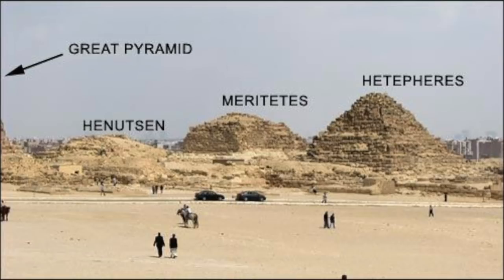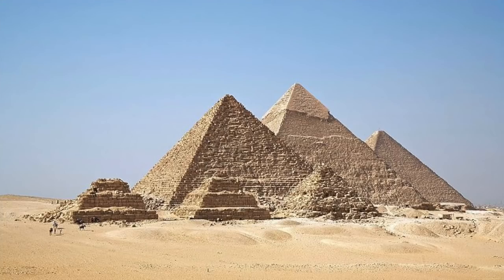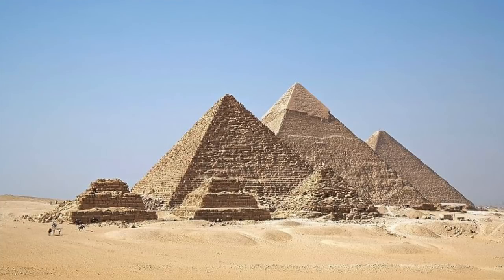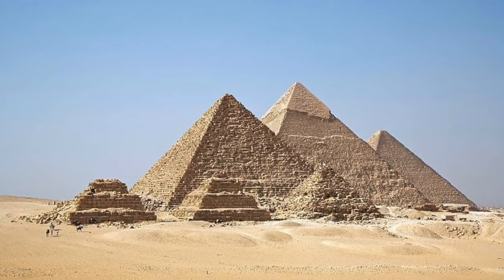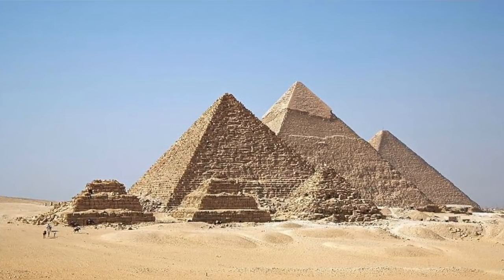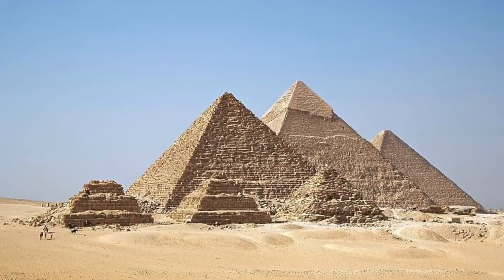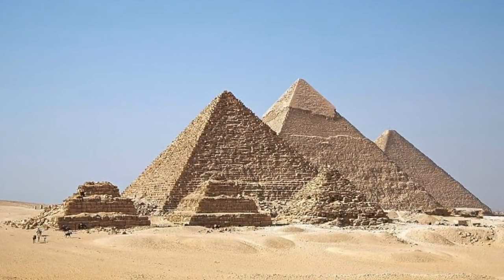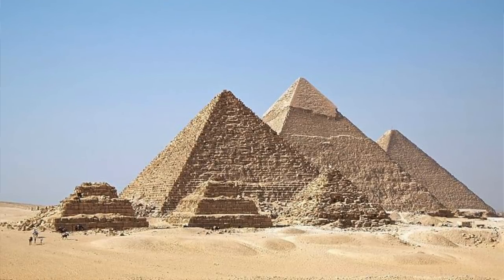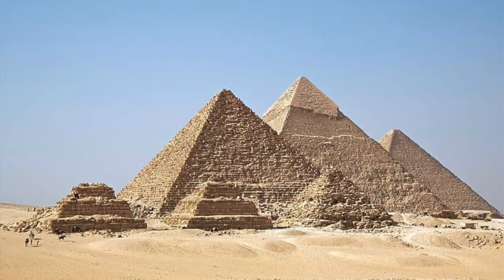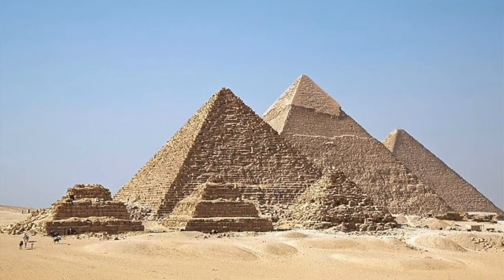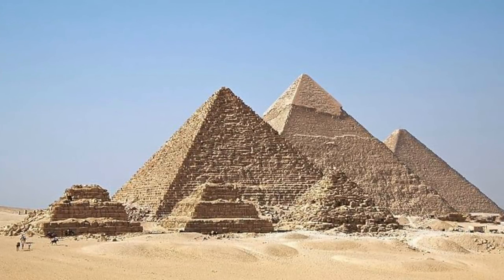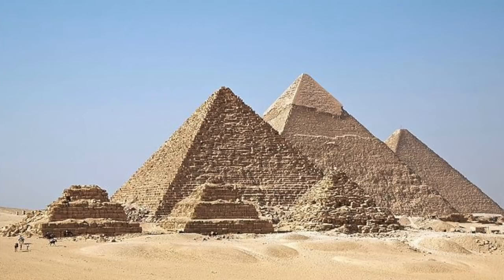Lehner only actually devotes two paragraphs and one illustration to the three little Menkure pyramids. Now moving to the Menkure pyramids — they're smaller than the Queens pyramids of the Khufu pyramid, perhaps smaller by about a third, and they look like stacked mastabas. The third, Lehner points out, is close to the central axis of the Menkure pyramid and is possibly a satellite pyramid, which was attached to temples by the Middle Kingdom.